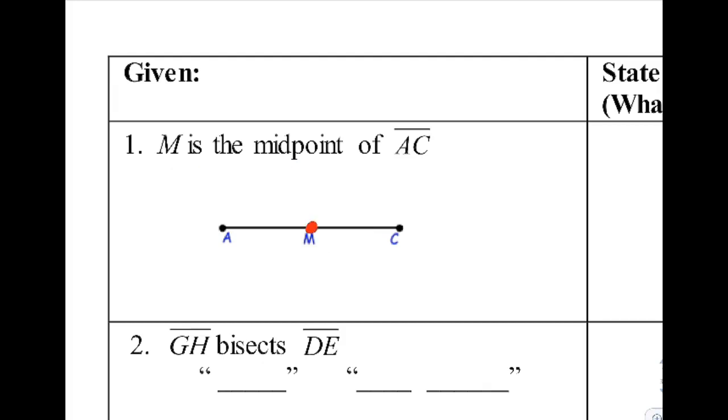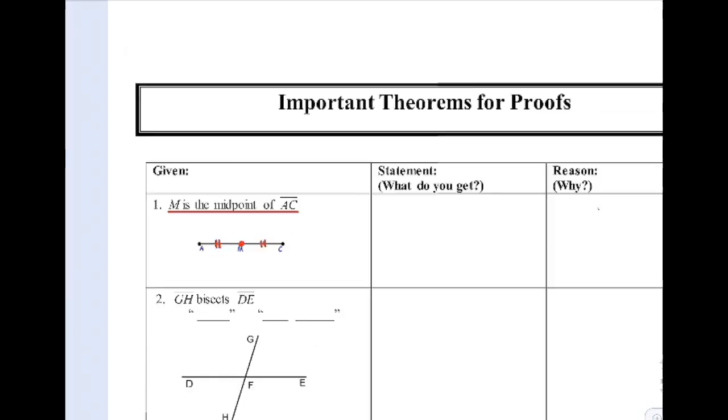So since M is the midpoint and it says it in words right there, we can go ahead and mark those two sections equal to each other because that's what a midpoint is. It's right in the middle.